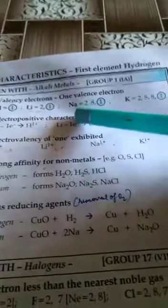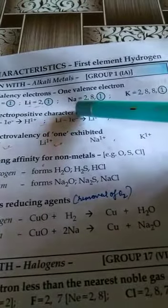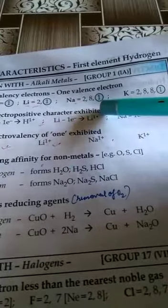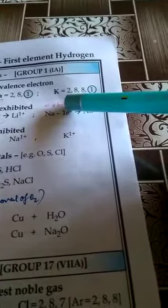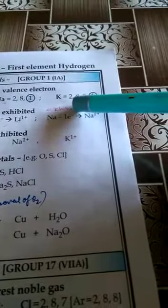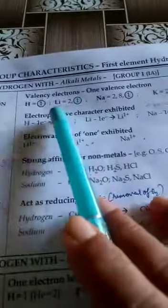After lithium, it is sodium in that group. Its atomic number is 11, so electronic configuration will become 2, 8, 1. Then it is potassium. Its atomic number is 19, so the electronic configuration will become 2, 8, 8, 1.